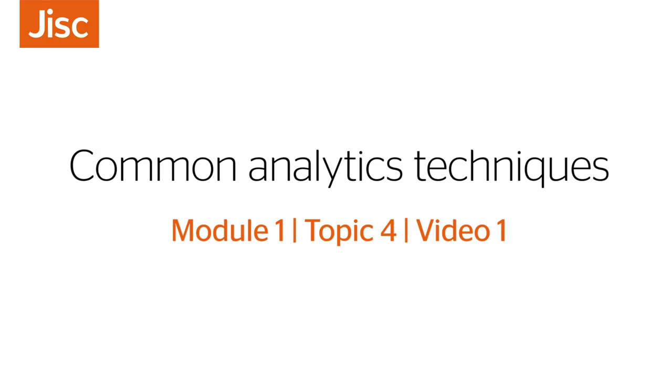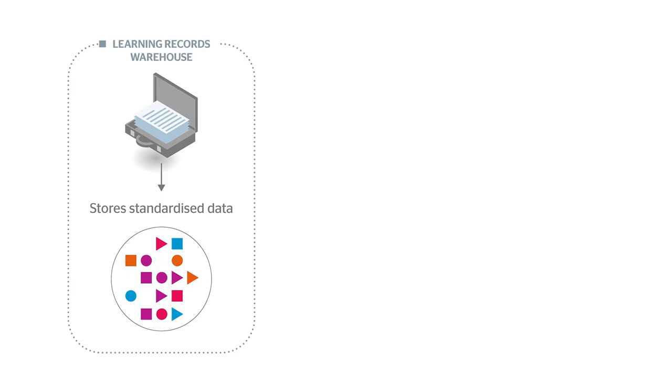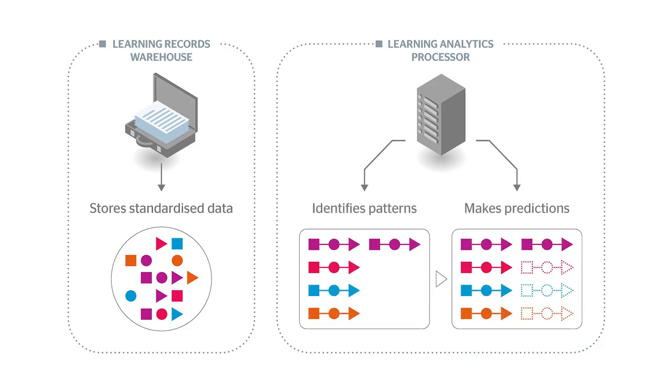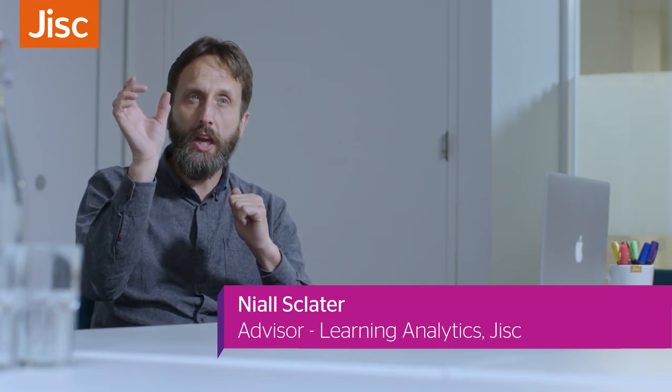How does the process of predictive analytics actually work? The data in the learning record store is passed to the learning analytics processor, which is the brains behind the whole system. It has a predictive model developed by looking at records of previous students and comparing the current student against those records. The model is comprised of a number of different indicators showing their percentage influence on student success — for example, access to the VLE being the number one indicator.